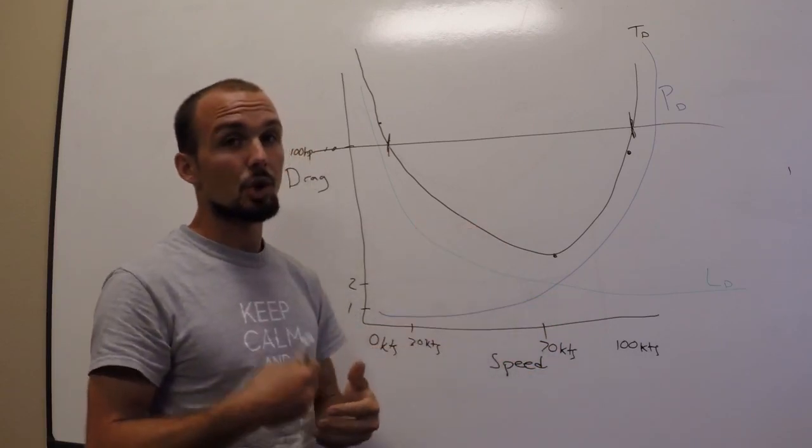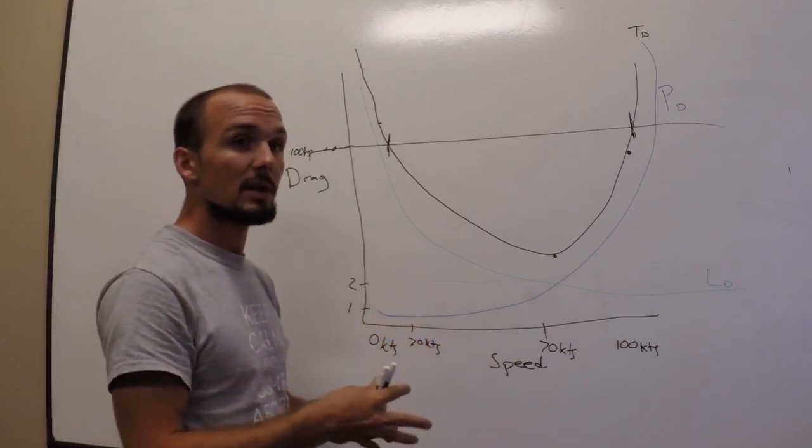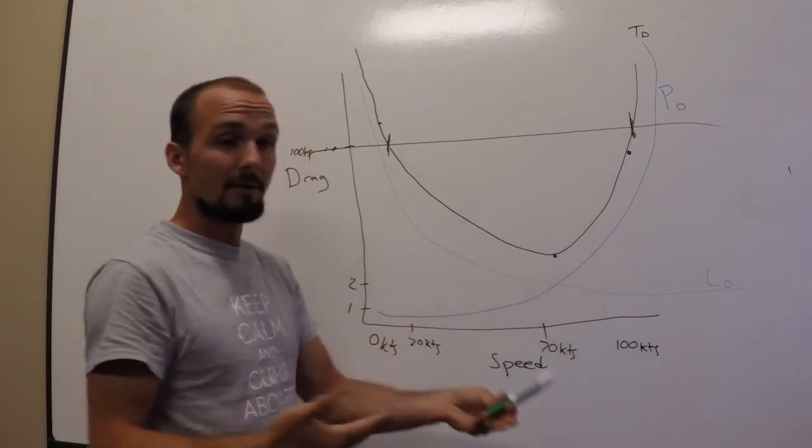That could be a problem if you're only at 20 feet and you don't have much altitude to trade to get that airspeed. That's why it's crucial to make a decision earlier on during the approach at 100 or 200 feet, if it's going badly, to go around, so that if you do need to build airspeed and trade altitude for airspeed, you have it available to you.